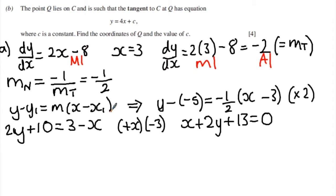And we get a method mark here for showing that the gradient of the normal is minus 1 over the gradient of the tangent. Now, remember here we can't get this accuracy mark without this method mark. And we can't get the next accuracy mark without this method mark. The final accuracy mark is given if we get the equation of the normal down here. And this mark is dependent on this previous m1 mark being given.